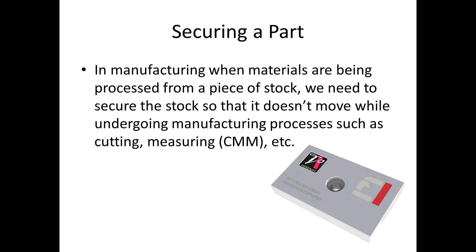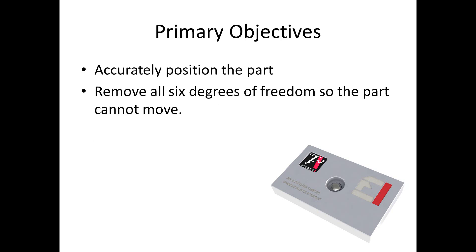First of all, securing a part. In manufacturing, when materials are being processed, you have to make sure that they don't move while they're being cut or measured or whatever you're doing inside that process. And so that's why we need to do it. The primary objective we talk about here is accurately positioning the part. With this sample part, we're going to really look at removing all six degrees of freedom so that the part can't move.